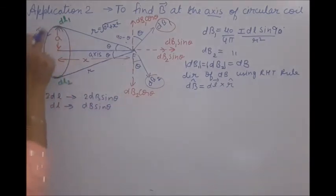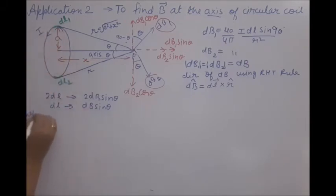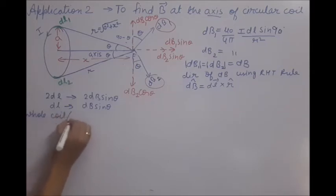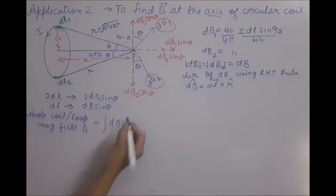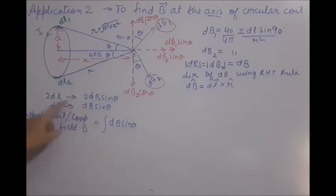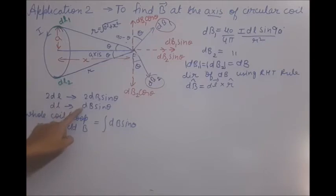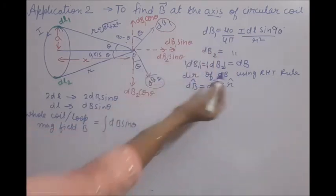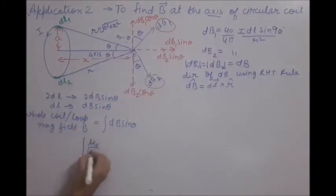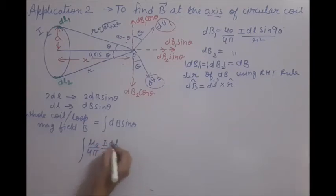Our target is the field due to the whole coil. If due to a length element dL we get dB sinθ as the resultant, then to get the total field B for the whole coil we integrate: B = ∫ dB sinθ. We substitute the value of dB — which is (μ₀/4π)(I dL)/R² — and also sinθ = a/R from the right triangle where a is perpendicular and R is hypotenuse.